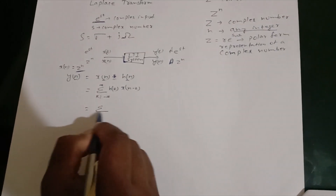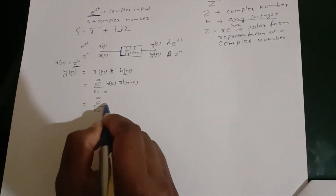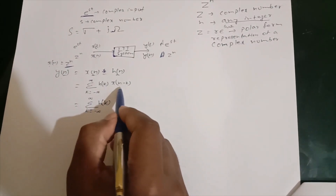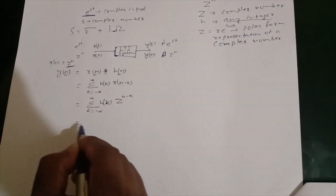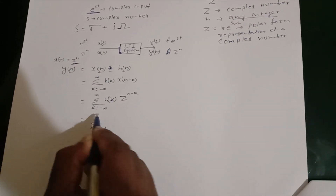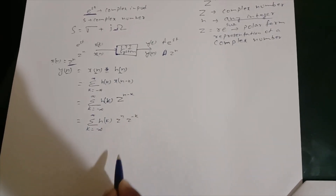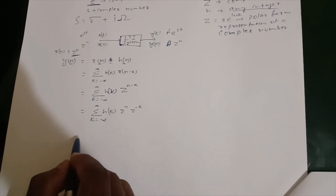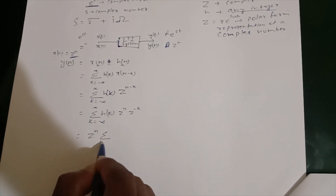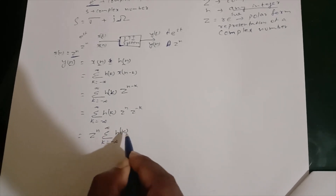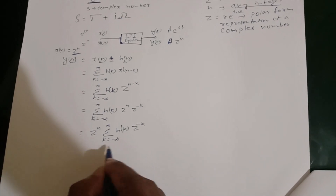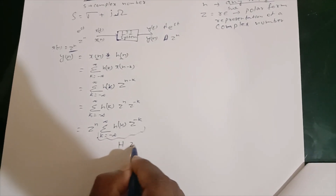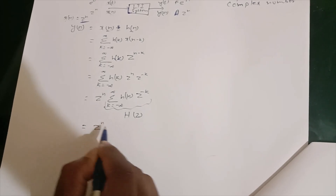So y(n) equals sigma from k = minus infinity to infinity of h(k)·z raised to (n − k), which equals sigma of h(k)·z^n · z^(−k). Since the summation is only over k, we can take z raised to n outside, giving: y(n) = z^n · sigma from k = minus infinity to infinity of h(k)·z^(−k). We denote this summation portion as H(z), so y(n) = z^n · H(z).